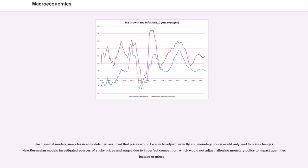Like classical models, new classical models had assumed that prices would be able to adjust perfectly and monetary policy would only lead to price changes. New Keynesian models investigated sources of sticky prices and wages due to imperfect competition, which would not adjust, allowing monetary policy to impact quantities instead of prices.